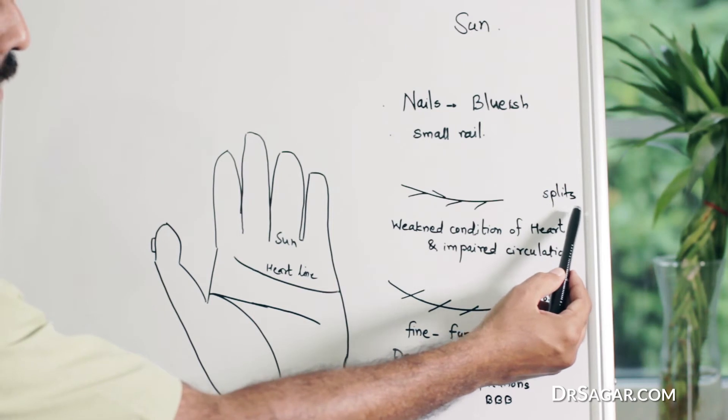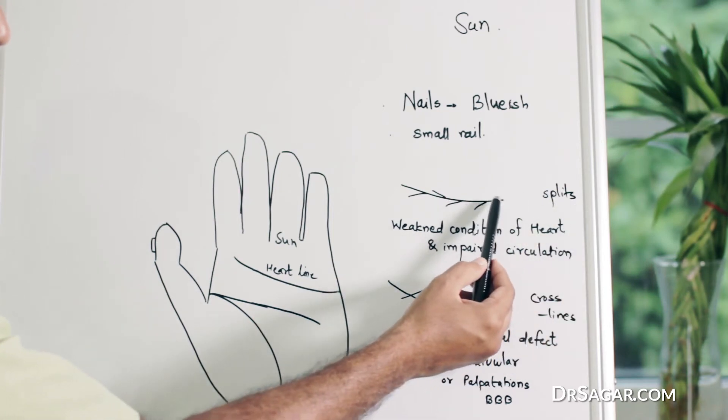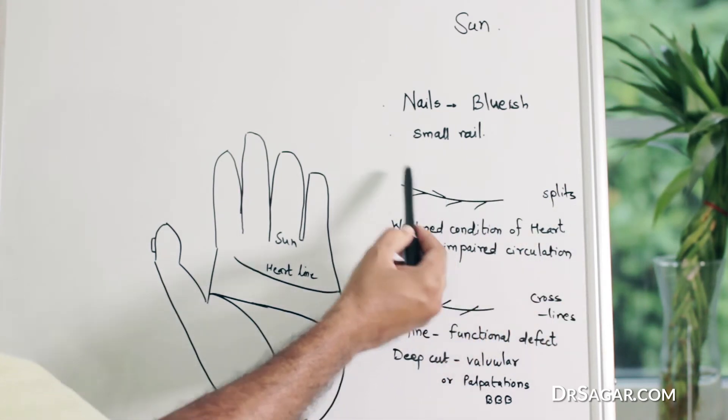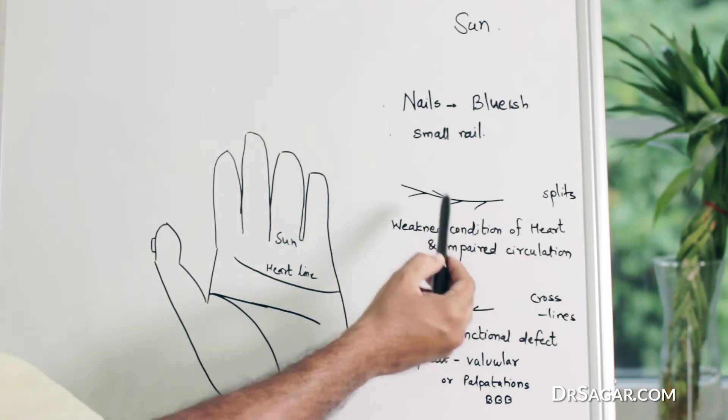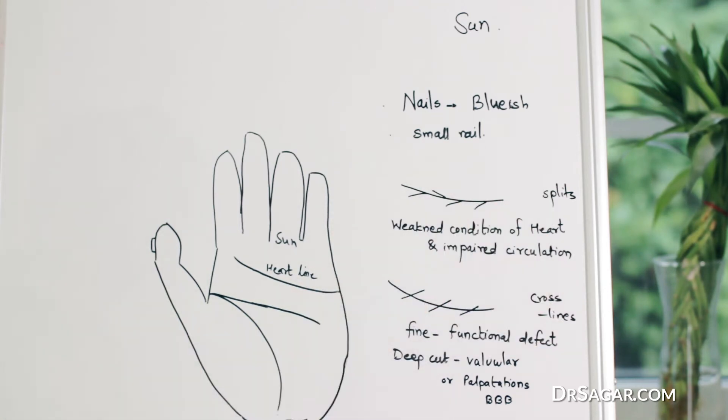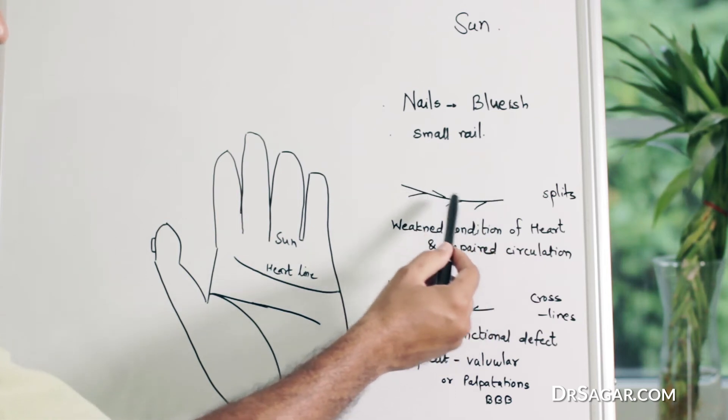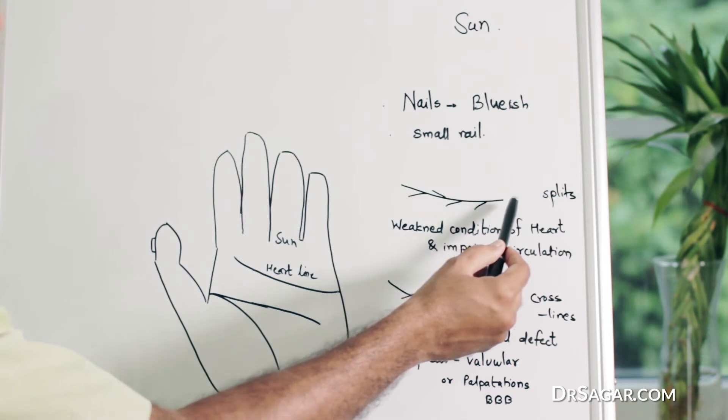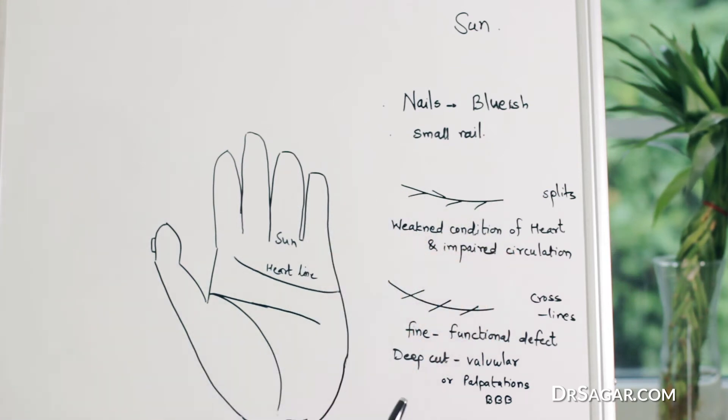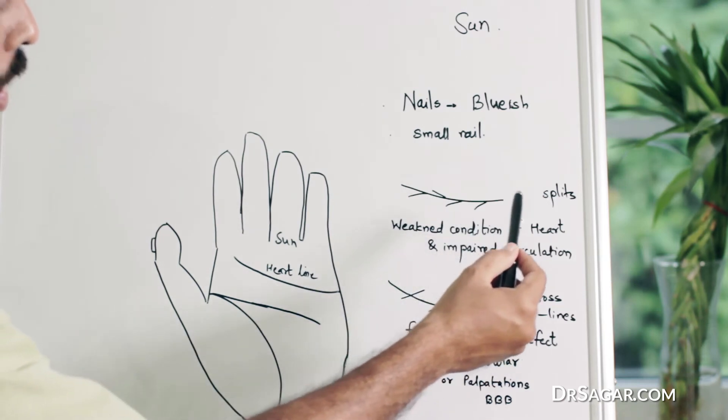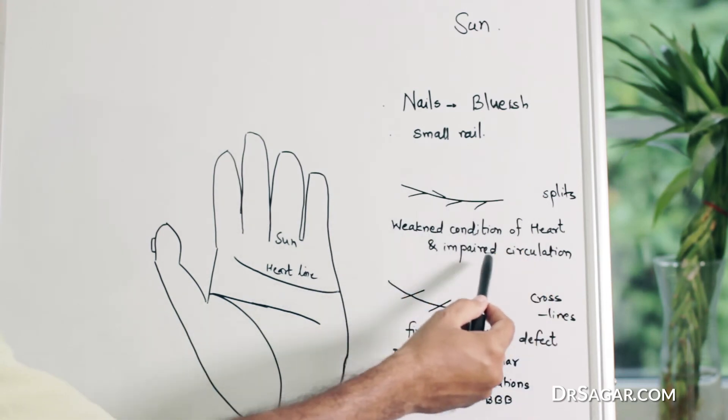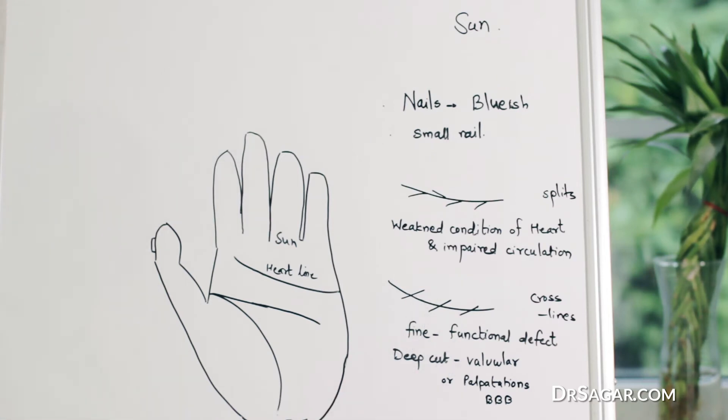The first defect is split. If the subsidiary lines go upward or downward, it is called a split line. The energy from the main heart line is going to the splits, leaving less energy in the main track, which indicates weakness, weakened condition of the heart, and impaired circulation, which ultimately leads to a kind of heart disease.